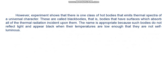Generally speaking, the detailed form of the spectrum of thermal radiation emitted by a hot body depends somewhat upon the composition of the body. However, experiment shows that there is one class of hot bodies that emits thermal spectra of a universal character. These are called black bodies — that is, bodies that have surfaces which absorb all of the thermal radiation incident upon them. Such bodies do not reflect light and appear black when their temperatures are low enough that they are not self-luminous. One example of nearly black bodies would be any object coated with a diffuse layer of black pigment such as lamp black or bismuth black.